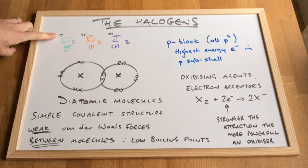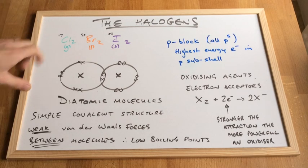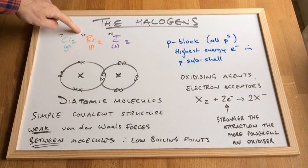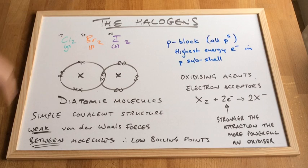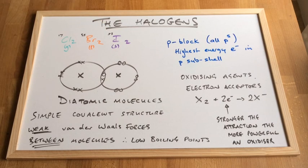I've added some extra information now. Chlorine has a proton number of 17, so in a Cl2 molecule there are 17 electrons times 2, giving 34 electrons. In a Br2 molecule we've got 35 times 2, so 70 electrons. And in I2 molecules we have 106 electrons. You can see the number of electrons is increasing, which makes the van der Waals forces stronger between the molecules and obviously raises their boiling points.